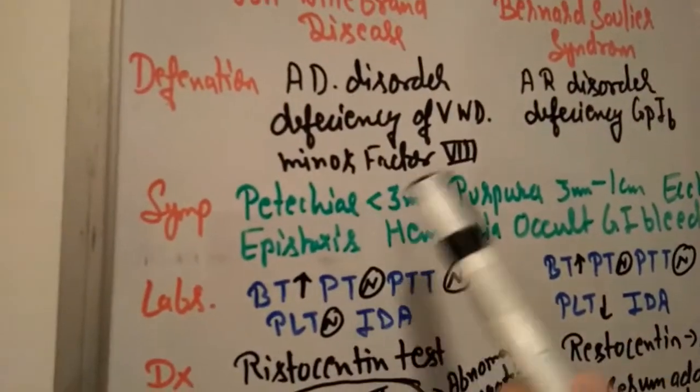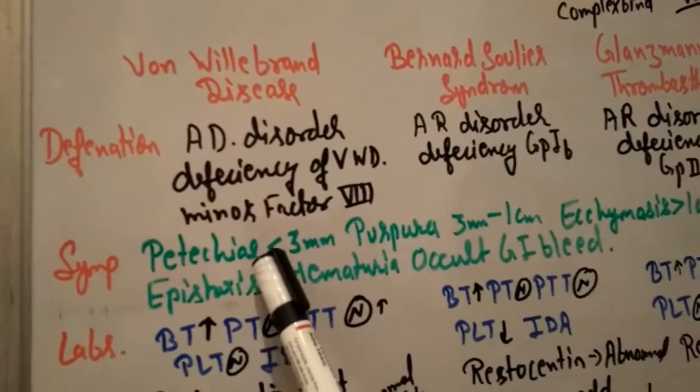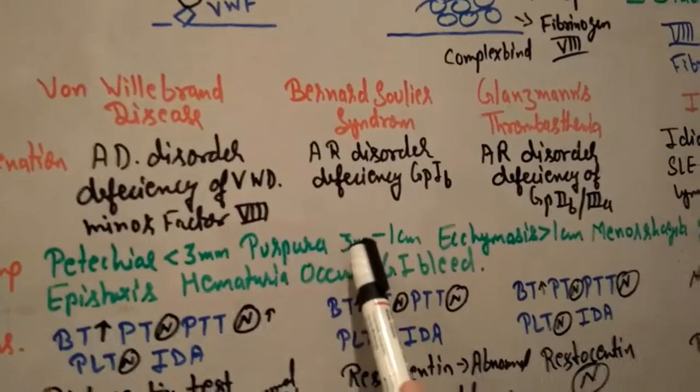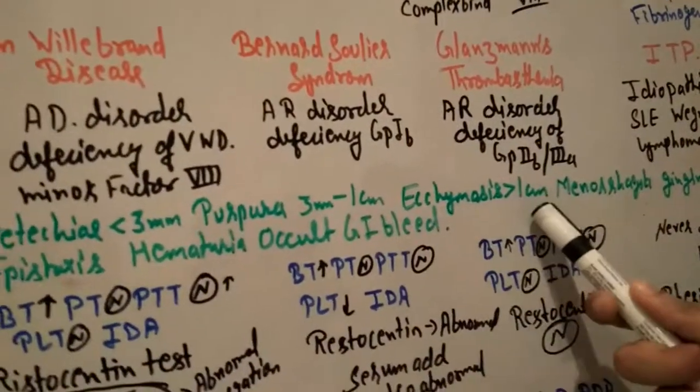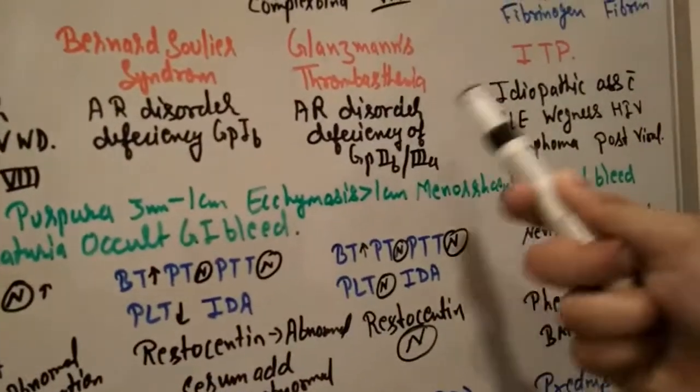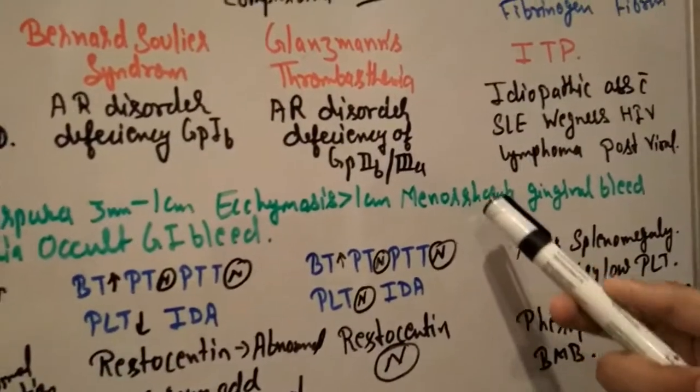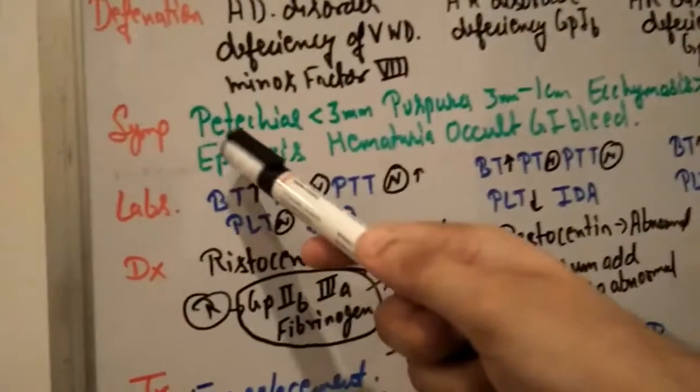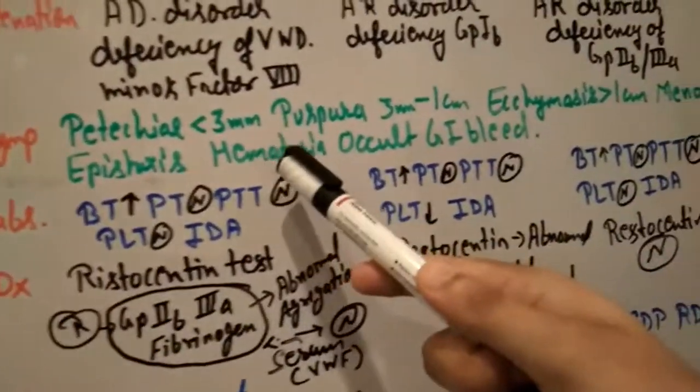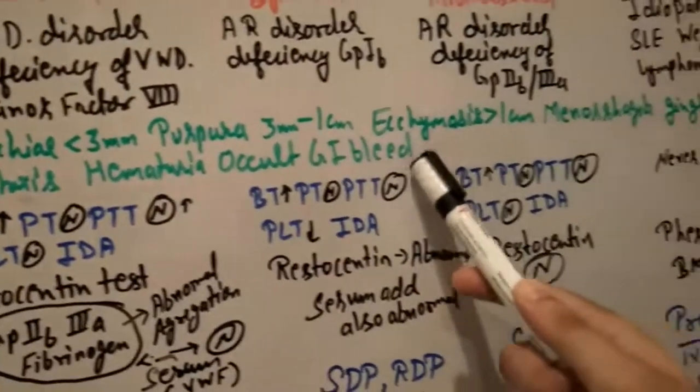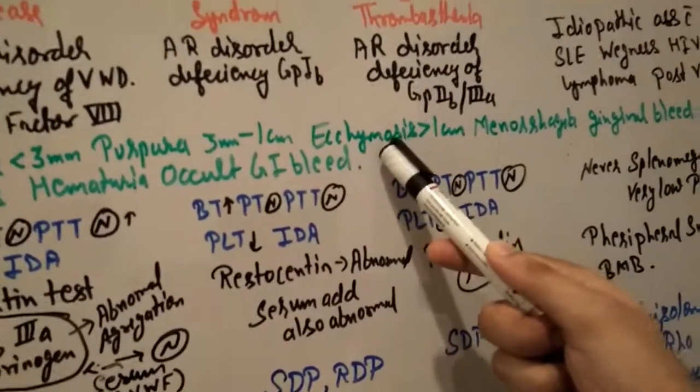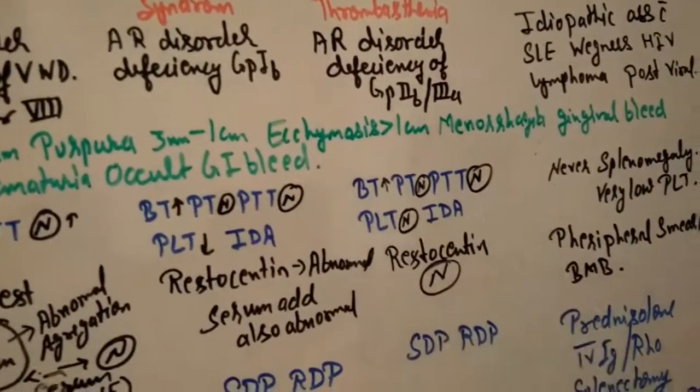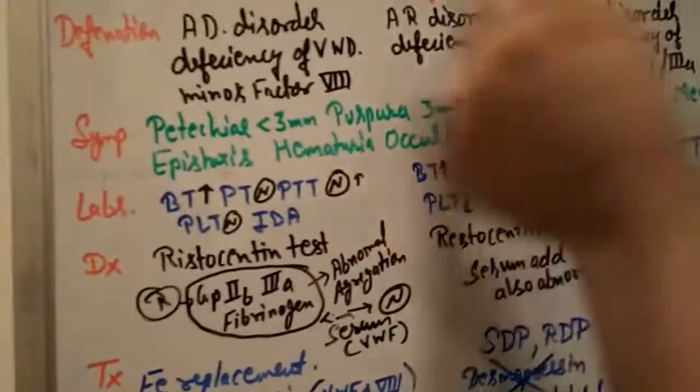The symptoms of all four are the same: petechiae less than 3mm, purpura 3mm to 1cm, ecchymosis more than 1cm, menorrhagia meaning excess blood loss during menstruation, gingival bleeding, epistaxis which is bleeding from the nose, hematuria meaning urine with blood, and occult GI bleeding meaning hematemesis or hematochezia. These symptoms are common in all four.